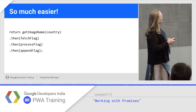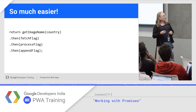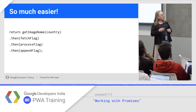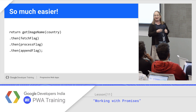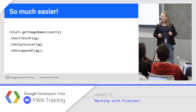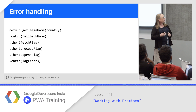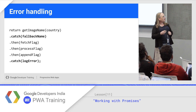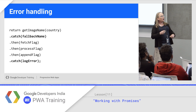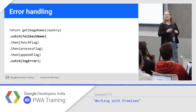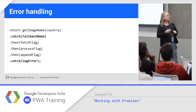Instead, with promises, you do something that returns a promise, then pipe that to the next step — fetch the flag image, pipe that to the process thing, then append it. Makes for very simple, modular code. In terms of error handling, you can put a catch keyword in here to capture any errors above. So if getImageName fails, this catch — this fallback — would get it. When the catch returns a value, it pipes into the next thing. So this might catch any errors getting the name and put back a default name.